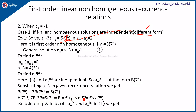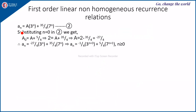Therefore b = 35/4, and the particular solution is (35/4)·7^n. Substituting the homogeneous solution and the particular solution into equation 1, we get a(n) = A·3^n + (35/4)·7^n, where the first term is the homogeneous solution and the second is the particular solution.